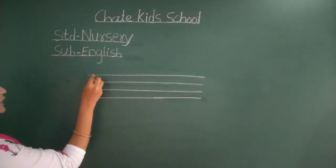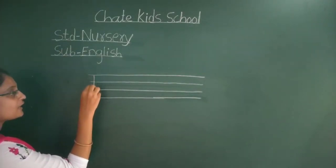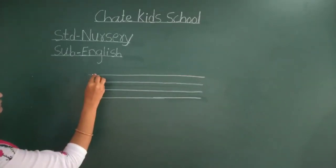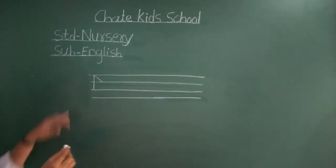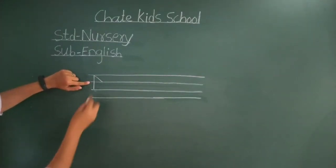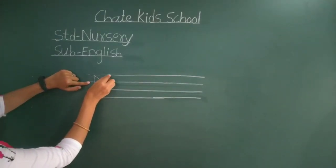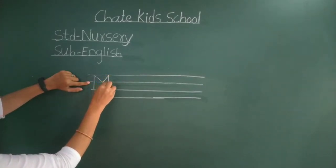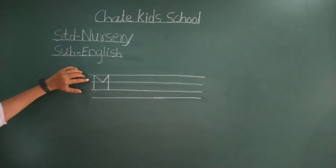Capital M: draw a straight line, joint with slanting line, middle line parenthesis, opposite slanting line, and again standing line. It may curve. Capital M.